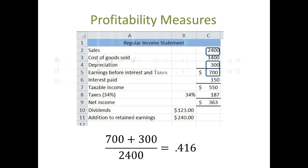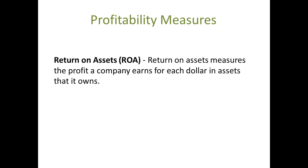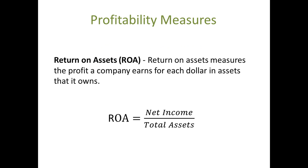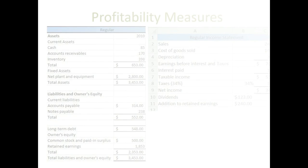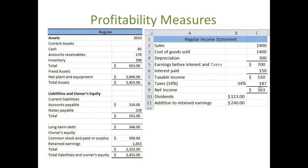Return on Assets. Return on Assets measures the profit a company earns for each dollar in assets that it owns. It is most commonly calculated as net income divided by total assets. In our example, we have $363,000 in net income and our total assets are $3.454 million, which gives us a return on assets of 10.51%.